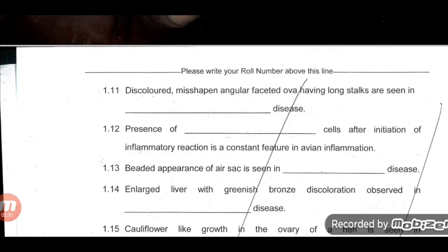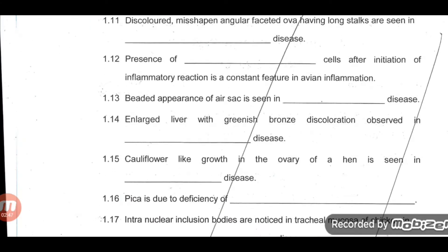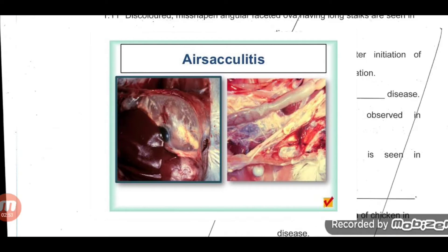Question 10: Presence of DASH cells after initiation of inflammatory reaction is a constant feature in avian inflammation. The answer is heterophils — in birds, neutrophils are replaced by heterophils. So that is something you need to remember. Question 12: Beaded appearance of air sac is seen in airsacculitis disease.